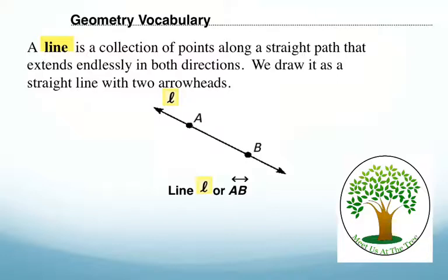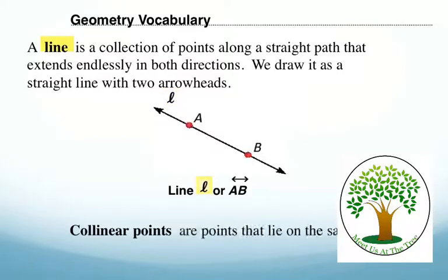We have a cursive letter, and if we're going to name it with a cursive letter, we draw it near one of the arrow parts. I don't want to really call it an end because lines don't end, but it's the ending of the drawing portion near the arrows. Collinear points are points that lie on the same line. We have the word linear in there, or even line. Co means together. So these are points that are together on a line.